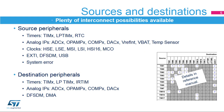The main peripherals having direct autonomous interconnections are timers, analog IPs, clocks, extended interrupt and event controller, digital filters for sigma-delta modulators, USB and system error for the connection sources, and timers, analog IPs, digital filters for sigma-delta modulators and direct memory access controllers for the connection destinations.